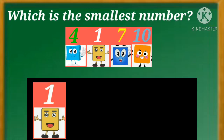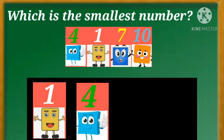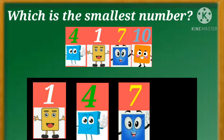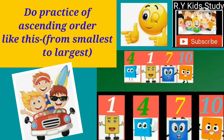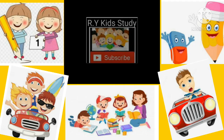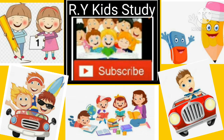Greater than one: four. Greater than four: seven. Greater than seven: ten. So the ascending order is one, four, seven, ten. Do practice of ascending order like this, from smallest to largest. Subscribe to our Way Kids Study.